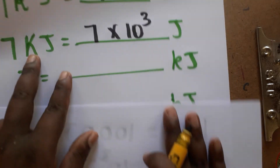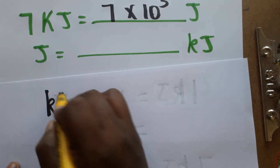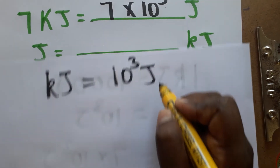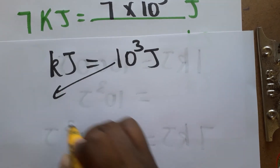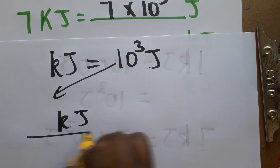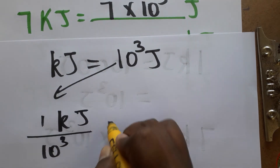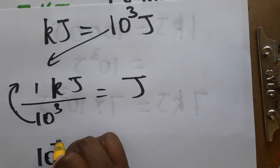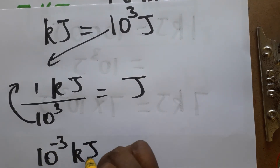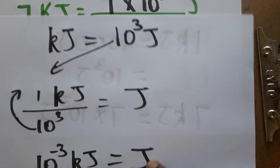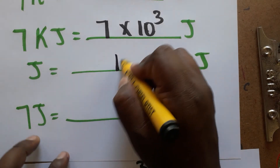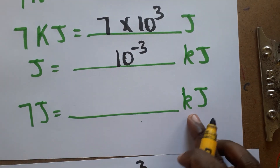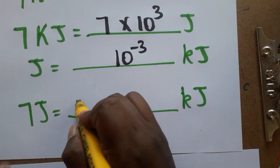Now we are going to do the conversion of joules to kilojoules. As we know, one kilojoule is equal to 1000 joules, or 10 power 3 joules. Bringing 10 power 3 to the denominator, we get: joules divided by 10 power 3 equals kilojoules. Taking 10 power 3 as a negative exponent to the numerator, we get 10 power minus 3 kilojoules equals 1 joule. So one joule is 10 power minus 3 kilojoules.